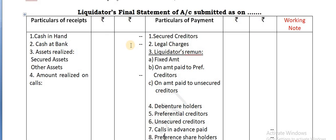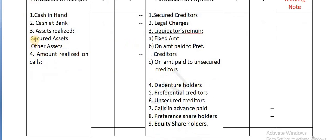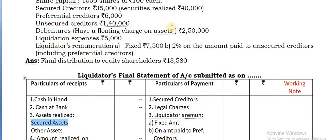Next, go for paying the amounts. Secured assets realized - the secured assets are 40,000 being raised, so that 40,000 you can take.